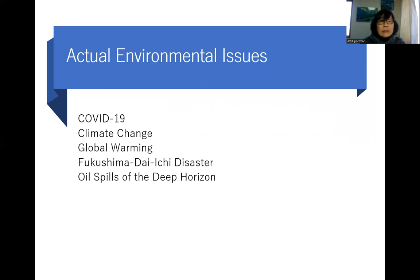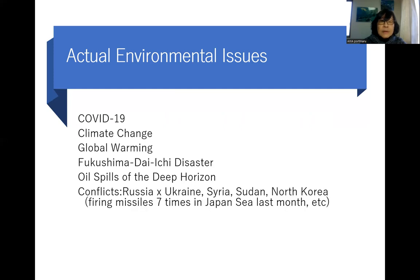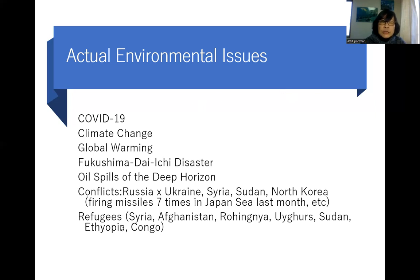Every year there are so many ships wrecking and leaking oil into the ocean. We also have conflicts: Russia versus Ukraine, NATO behind Ukraine, Syria, Sudan, North Korea — which fired missiles seven times into Japan's sea in January 2022. We also have the refugee problem in Syria, Afghanistan, Rohingya, Uyghurs, Sudan, Ethiopia, and Congo.